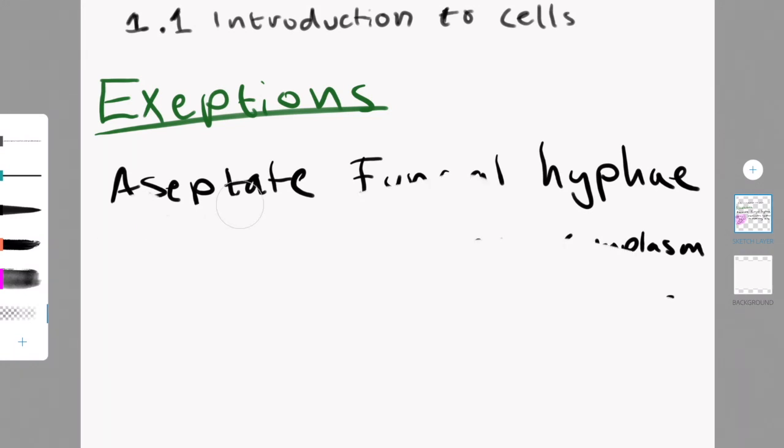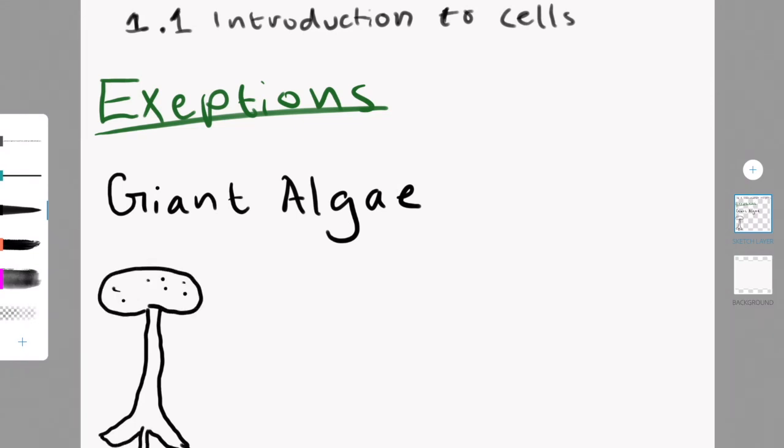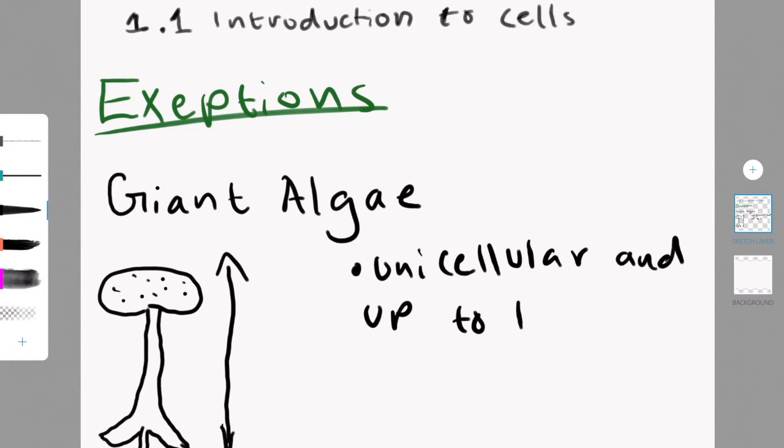The third exception is a type of giant algae. This giant algae is unicellular, but you can still find samples of it that is up to a hundred millimeters long. That is essentially one cell that is a hundred millimeters long, which is very atypical for cells.